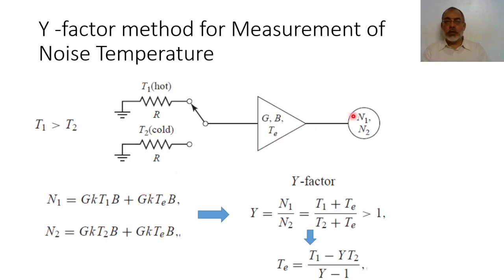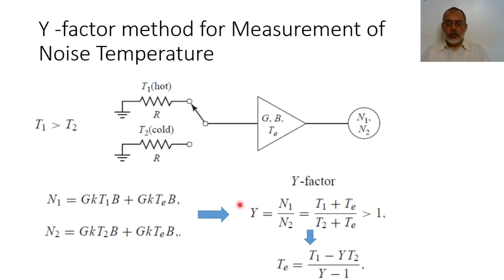It is quite clear that noise one is greater than noise two because temperature T1 is greater than temperature T2. The ratio N1 over N2 is defined as the Y factor. So Y equals N1 over N2.